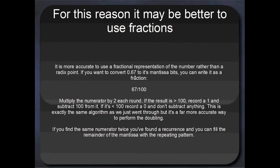So we want to avoid doing that, and sometimes it might be better to represent your number or your fractional part as an actual fraction. Say we're converting something like 0.67 to its mantissa bits, it might help to write that out as 67 over 100, which is the meaning of 0.67. And multiplying the numerator by 2, so multiplying 67 by 2 each round, and every time you get something greater than 100, you record a 1 in your mantissa, and you subtract 100 from it. Every time you get something less than 100, you record a 0 in your mantissa, and you don't subtract anything. This is an identical algorithm to the previous way that we did it, but instead of writing out your number as a decimal point, if you write it out as a fraction, then you don't run the risk of running into those rounding errors. If you find exactly the same numerator twice, then you've found a recurrence, and you can fill the remainder of the mantissa with those repeating digits.